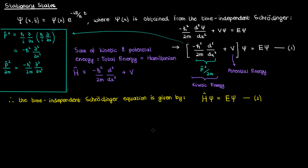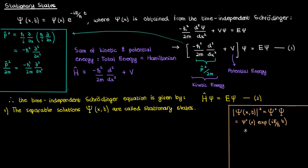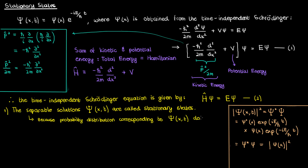Anyway, back to our separable solutions to the Schrödinger equation. These separable solutions are also called stationary states, but why are they stationary? Well, if we determine the probability distribution corresponding to the wave function psi of x,t — which is just the magnitude squared of capital psi — we'll find that the time exponential from psi and psi conjugate cancel out and multiply to 1. So in the end we'll only be left with the modulus squared of small psi of x, and the probability distribution does not change with time.